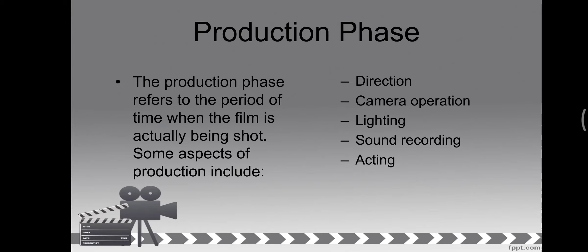So that's pre-production — generally, it is the preparation of everything. Then we have the production phase. The production phase refers to the period of time when the film is actually being shot. Some aspects of production include direction, camera operation, lighting, sound recording, and of course, acting.